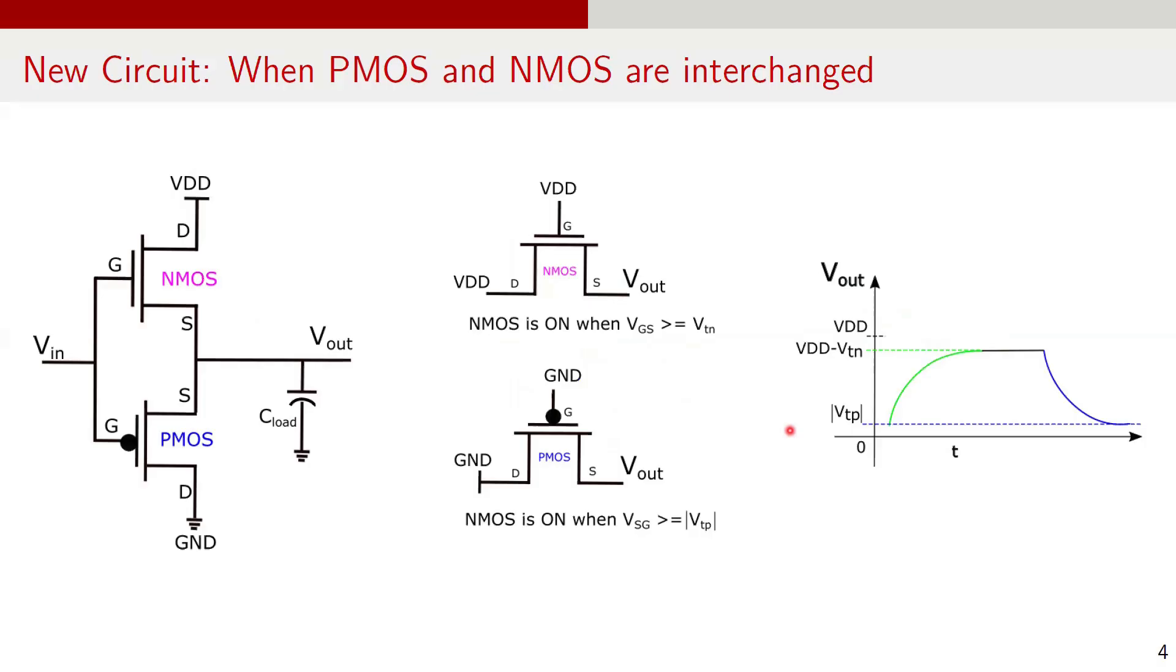Now let's look at the modified circuit where the NMOS and PMOS are swapped. In this configuration, the NMOS is placed at the top. Since for the NMOS transistor, the drain is at a higher voltage than the source, the terminal connected to VDD acts as a drain and the terminal connected to output node Vout is the source. For the PMOS transistor, the source is at higher voltage than the drain. Therefore, the terminal connected to Vout is the source and the terminal connected to ground is the drain.